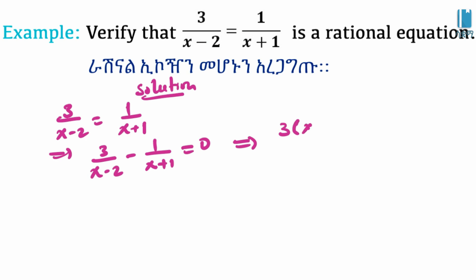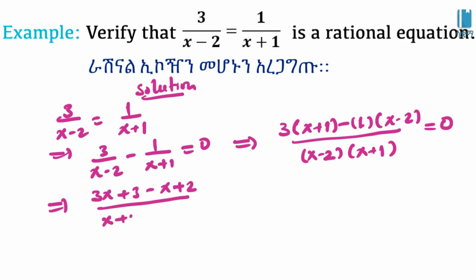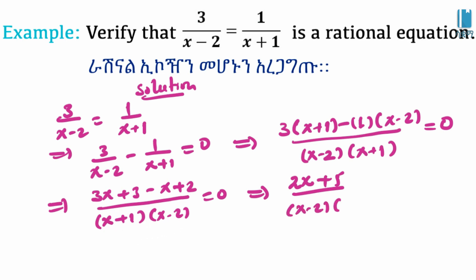We combine the fractions: x plus 1 minus 1 times x minus 2, all over the common denominator x minus 2 times x plus 1. This simplifies to: 3x plus 3 minus x plus 2, all over x plus 1 times x minus 2, equals zero.